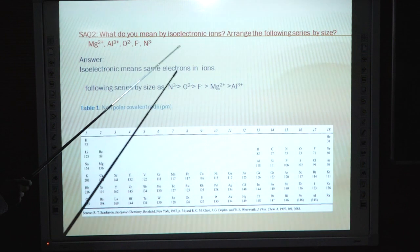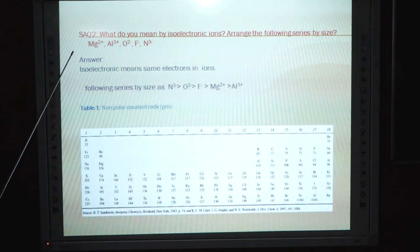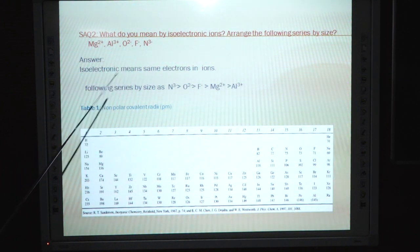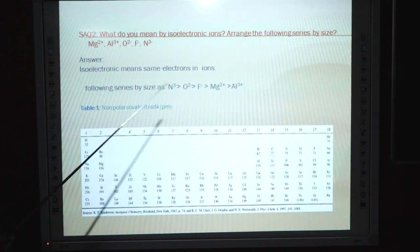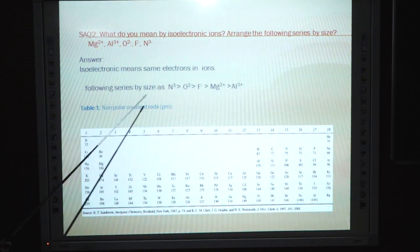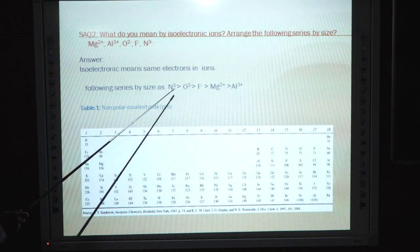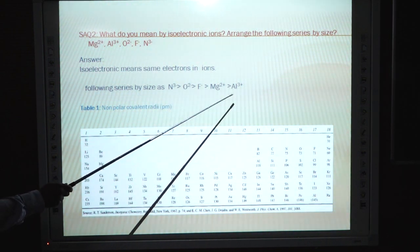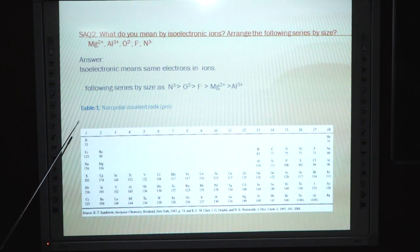Self-assessment question 2: What do you mean by isoelectronic ions? Arrange the following series by size: magnesium²⁺, aluminum³⁺, O²⁻, F⁻, N³⁻. Isoelectronic means having the same number of electrons in the ions. The order by size is: aluminum³⁺ < magnesium²⁺ < fluorine⁻ < oxygen²⁻ < nitrogen³⁻, since all are isoelectronic but greater nuclear charge means smaller radius.